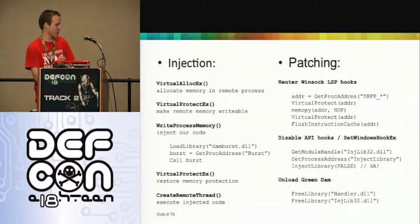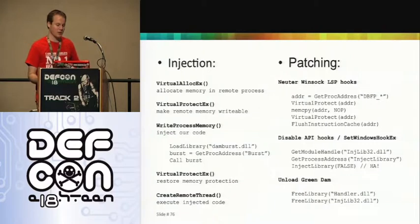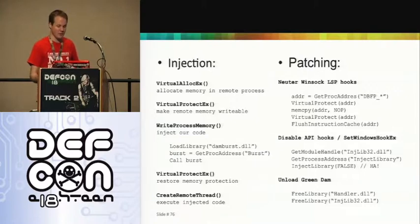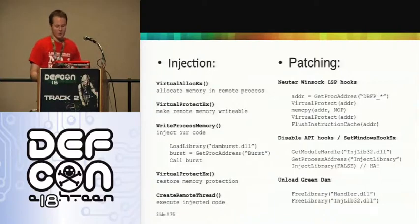The injection process uses standard Win32 APIs to allocate memory in remote processes, write code into those processes, and start a thread from the loaded DLL. For patching Winsock LSPs: once running inside a process infected with Green Dam, we simply overwrite the LSP with NOPs — since properly removing them is a pain — effectively neutering its functionality. We pop into each process, patch out Green Dam's functionality, and then unload it to ensure the vulnerable routines are no longer present.